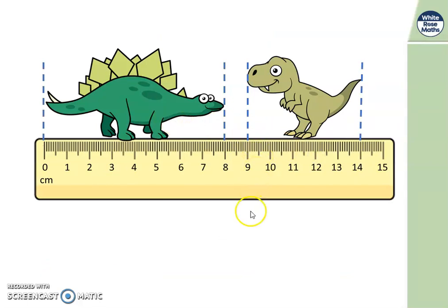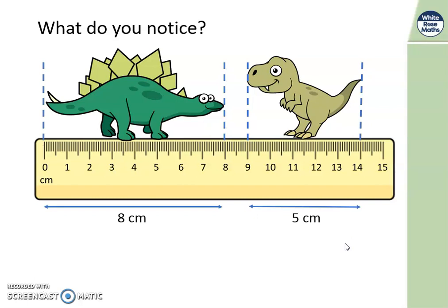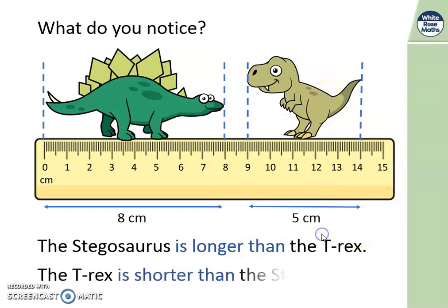Let's have a look at these toy dinosaurs. Here we've got a stegosaurus and here we have a t-rex. What could you notice about these dinosaurs? Pause the video now and write down what you notice. Let's see how you did. It starts at 0 and it ends at 8 and they are centimetres. So the stegosaurus is 8 centimetres long. This one starts here and ends here. So we could start here as if it's 0 and count on: 1, 2, 3, 4, 5 centimetres. So the t-rex is 5 centimetres long. What else have you noticed? That the stegosaurus is longer than the t-rex. And therefore the t-rex must be shorter than the stegosaurus. We'll need to use language like this today.